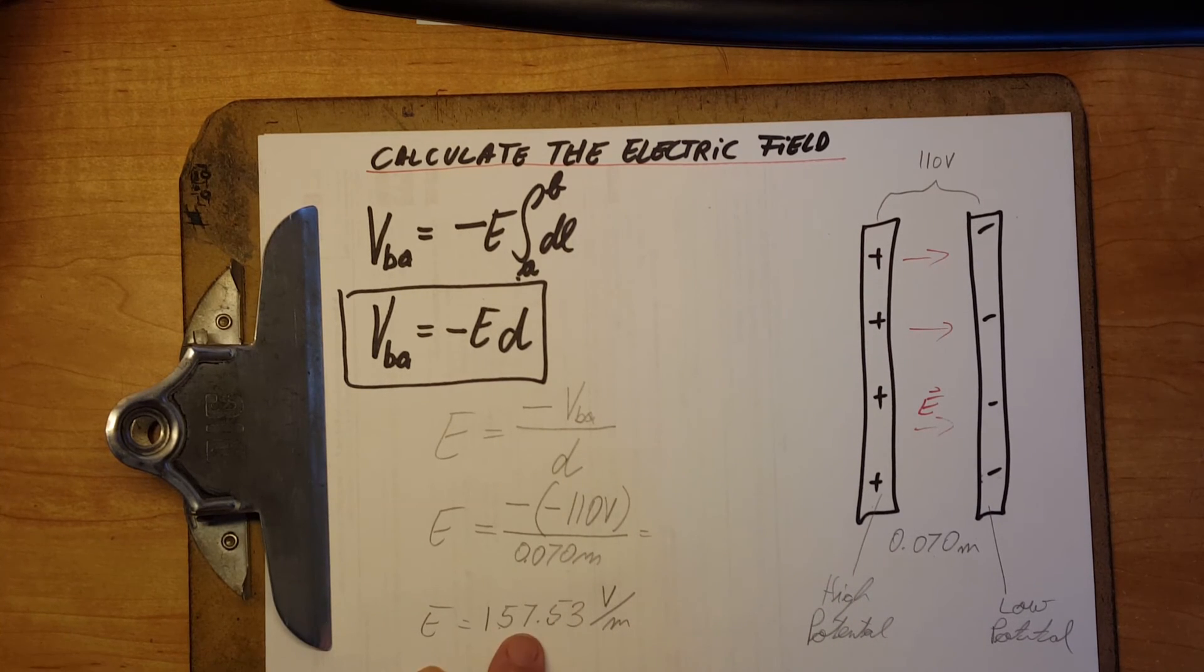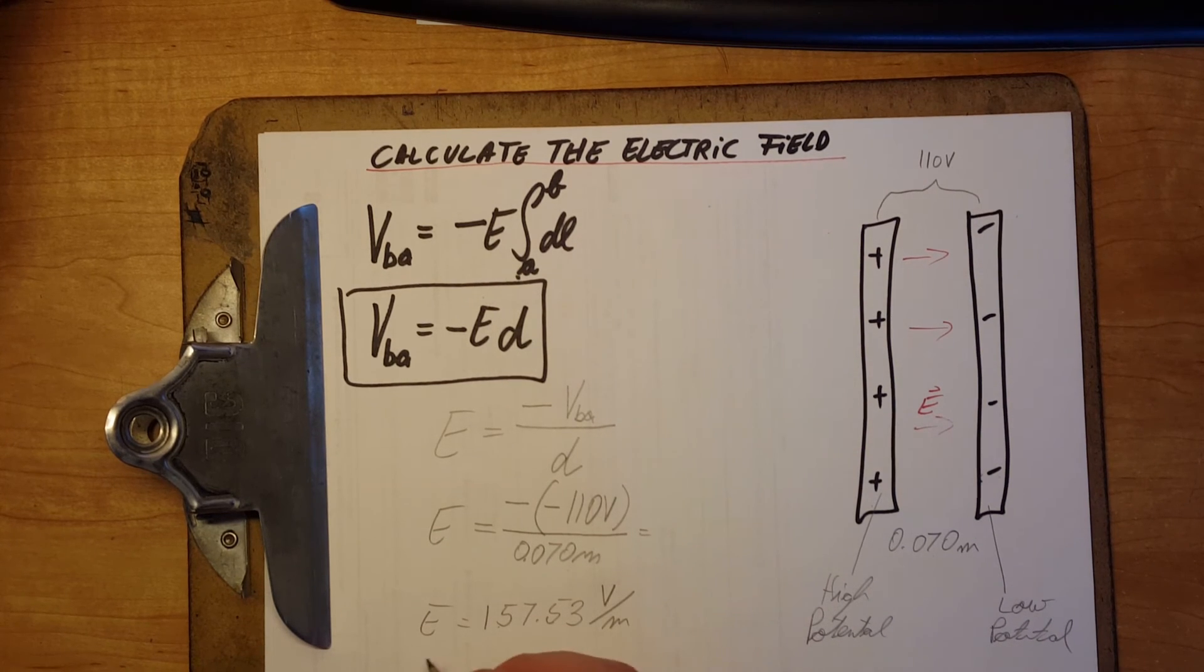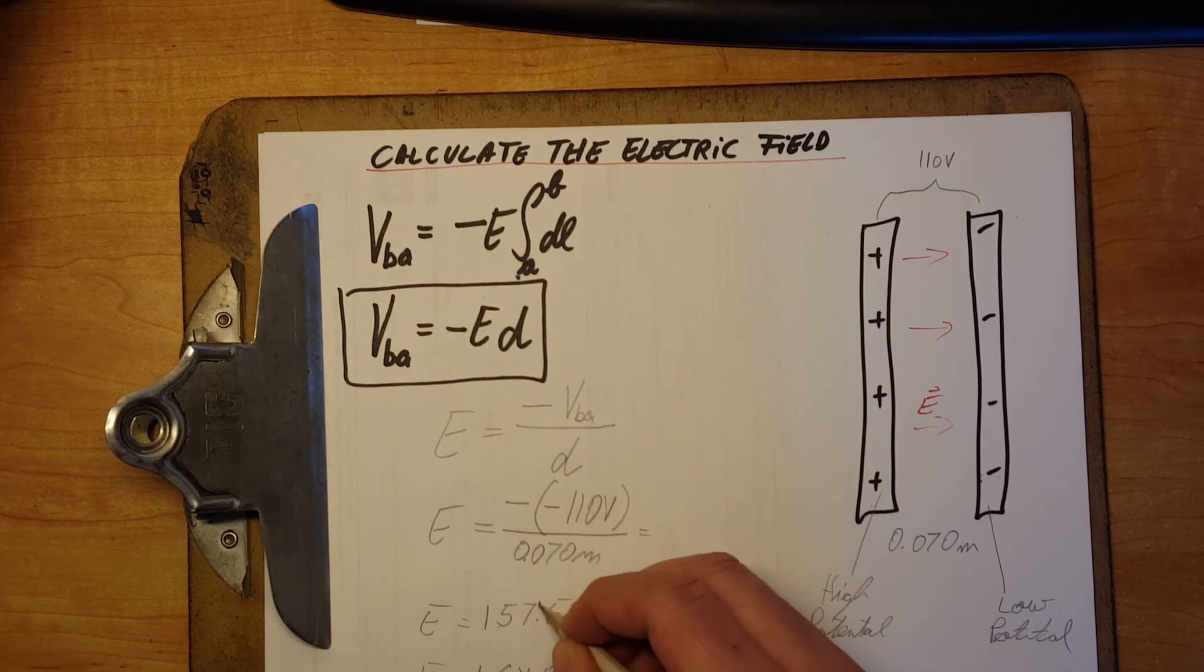If we wanna do significant figures, we can see there's two. So, we can round it to 1.6 times 10. Hold on, I think I wrote it wrong. There's a 1 in here. 1,571. There you go.